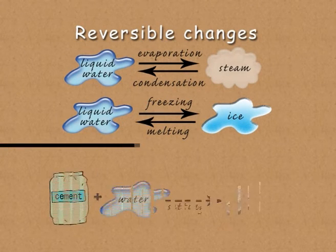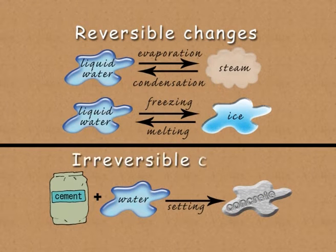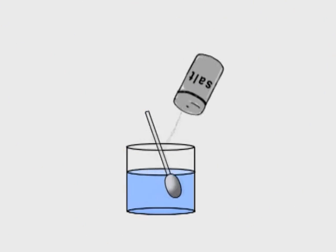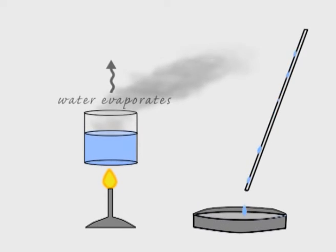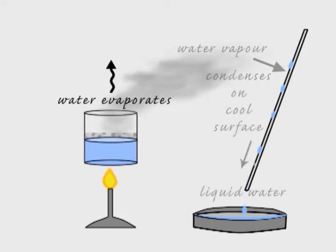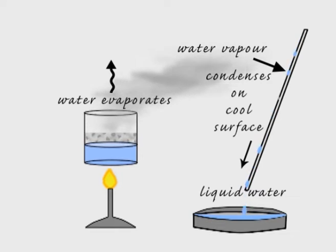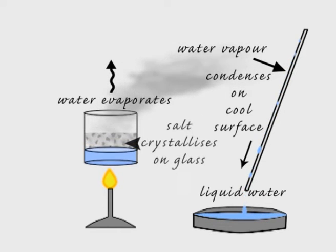Some changes that occur go back the other way. Others are more permanent and here to stay. Salt dissolved in water can be separated once the liquid has evaporated. The water that you get tastes just fine cause the salt's been left behind.